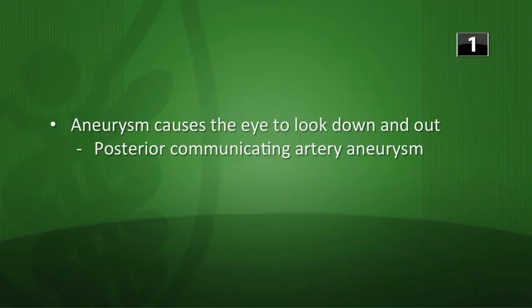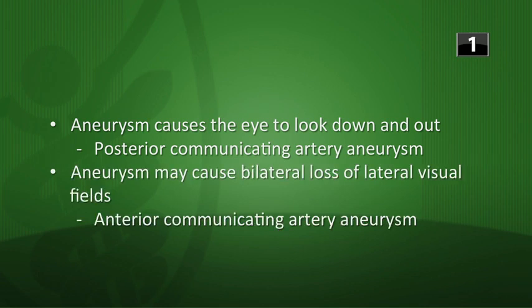It's time for the three question warm-up for Farm 6. What arteries are damaged via hemorrhagic stroke or ischemic stroke with each of the following presentations? First: an aneurysm causes the eye to look down and out — this is a posterior communicating artery aneurysm. An aneurysm may cause bilateral loss of lateral visual fields — this is the anterior communicating artery aneurysm compressing the optic chiasm.